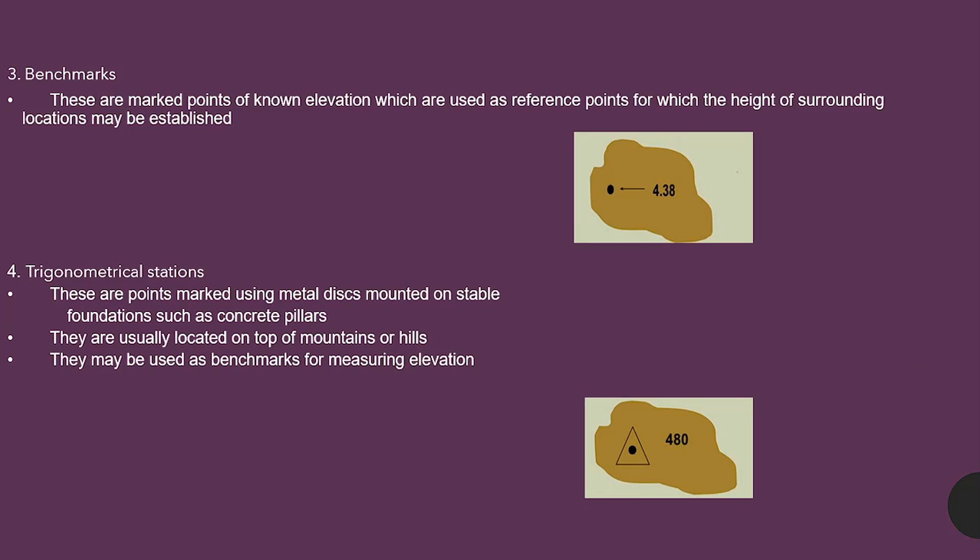Benchmarks. These are marked points of known elevation, which are used as reference points for which the height of surrounding locations may be established. Number four, trigonometrical stations. These are points marked using metal disks mounted on stable foundations, such as concrete pillars. They are usually located on the top of mountains or hills. They may be used as benchmarks for measuring elevation. So, that's just something to keep in mind moving forward.